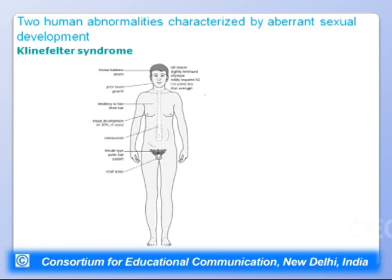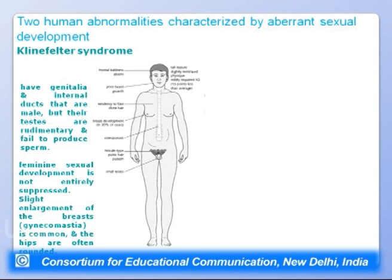Two human chromosomal abnormalities helped clarify this. Klinefelter syndrome individuals have male genitalia and internal ducts, but rudimentary testes that fail to produce sperm — making them sterile males — with some feminization including slight breast enlargement (gynecomastia) and rounded hips. Turner syndrome individuals have female external genitalia and internal ducts, but rudimentary ovaries, short stature (usually under five feet), cognitive impairment, skin folds on the back of the neck, and underdeveloped breasts.